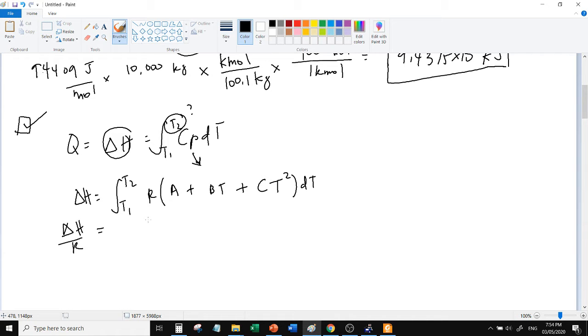Now we need to integrate. We need to integrate because we don't know T2. So let's move R to the other side and take it outside the integral since it's a constant. Then after integrating: A(T2 minus T1) plus B times (T2 squared minus T1 squared) over 2, plus C(T2 cubed minus T1 cubed) over 3.